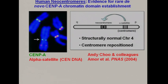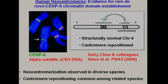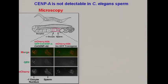Centromere repositioning is common among very closely related species, so centromeres can move around even away from the repetitive DNA that's usually considered a hallmark of centromere function. In C. elegans, the question is how do you set up these domains in the early embryo? There's no CENP-A in C. elegans sperm. We can see by microscopy that there's no CENP-A in sperm at all — confirmed using a CENP-A GFP fusion.